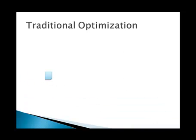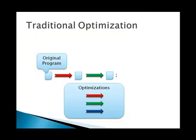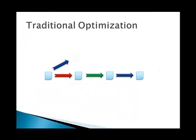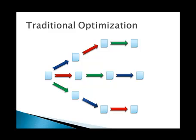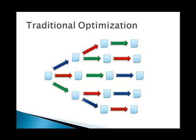In traditional optimization, we take a program and apply a sequence of optimizations which transform that program, making it incrementally better and better. The problem is that we can take those same optimizations and apply them in a different order, each order producing a different optimized result. Ideally, we would look at all these different results and choose the best program. However, there are an exponential number of orderings, and the destructive style of traditional optimization limits us to searching one path at a time. Unfortunately, there is no ordering which produces the optimal result for all programs. These factors combine to produce the well-known phase ordering problem.